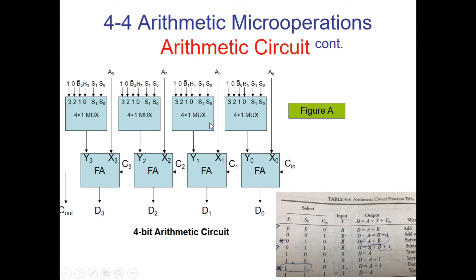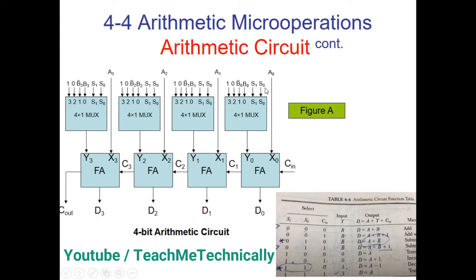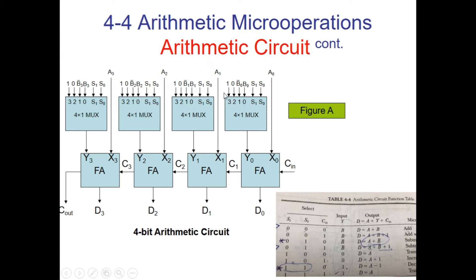As you know, what a MUX does is it takes a selection bit and according to the selection bit it passes a value to its output. So if our selection bits are 0 0, it passes the value of B. If selection is 0 1, it passes B complement. If selection is 1 0, it passes 0. And if selection is 1 1, it passes the value 1.